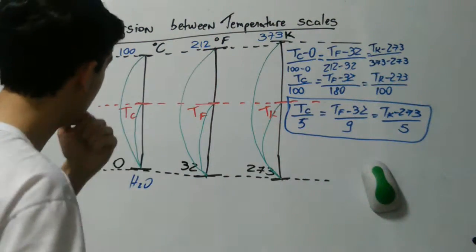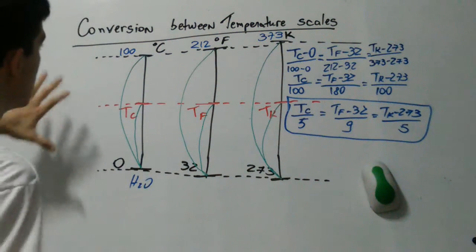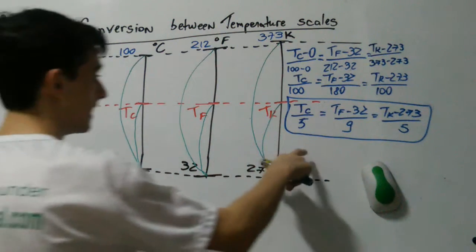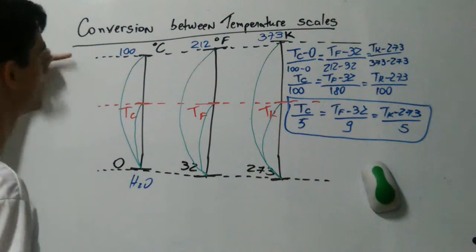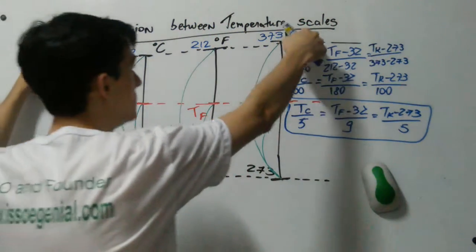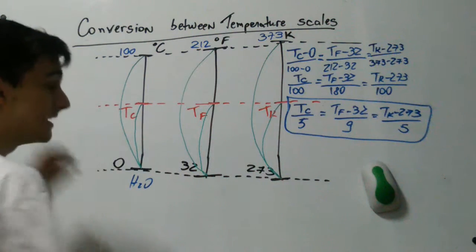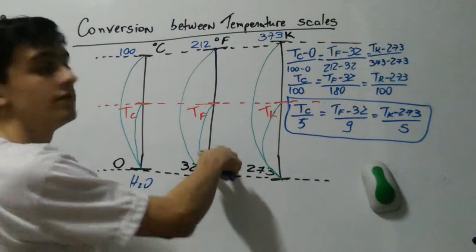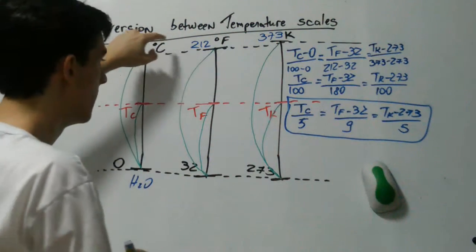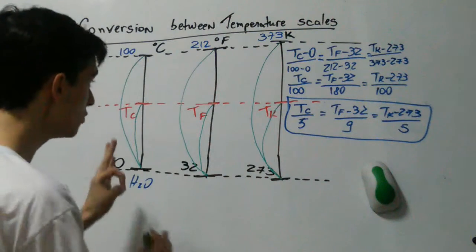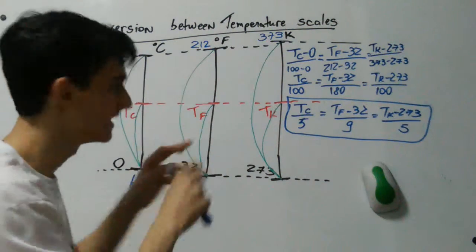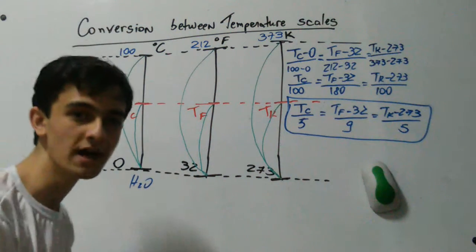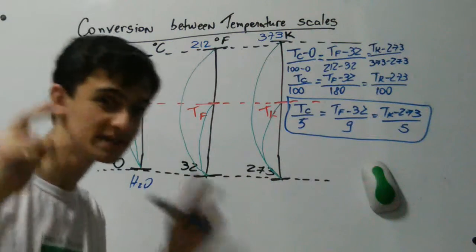The Fahrenheit scale has a difference: the interval between the steam point and the ice point in both the Celsius and the Kelvin scale is 100 — zero to 100 and 273 to 373 — so numerically the same for both scales. But not for Fahrenheit. This interval for Fahrenheit is 180. So there are more numbers between the ice point and the steam point in the Fahrenheit scale, meaning you can be somewhat more precise when you measure.